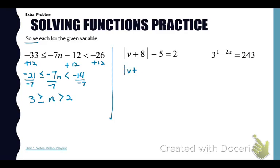Now your second function is an absolute value. We need to isolate that by adding 5. Then the strategy for solving an absolute value equation is to set up two cases. One where it equals a positive value, so positive 7, and then one where it equals a negative, negative 7. Add your 8 to both sides. So your two answers are negative 1 and negative 15. If you plug those back in they will both make that equation true.